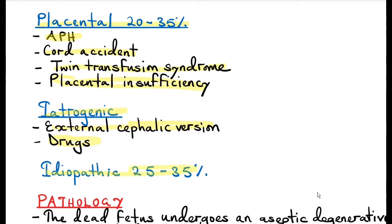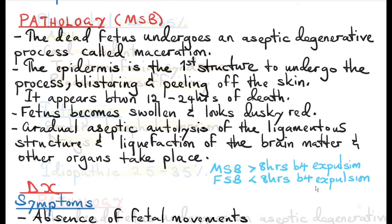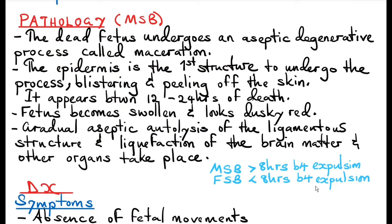Iatrogenic causes include external cephalic version and some teratogenic drugs. Idiopathic causes account for 25 to 35 percent of all the causes.